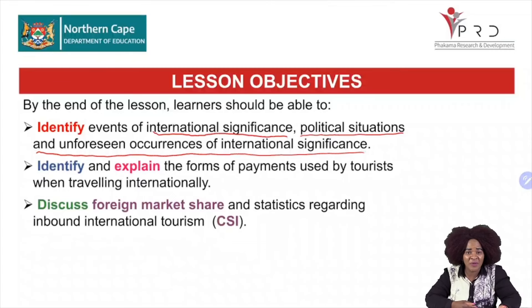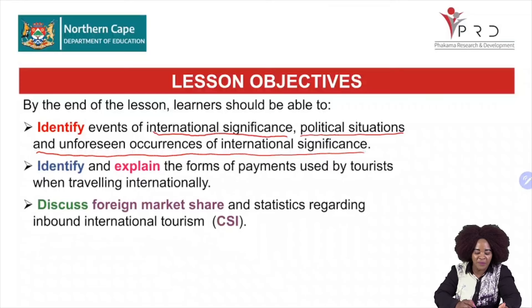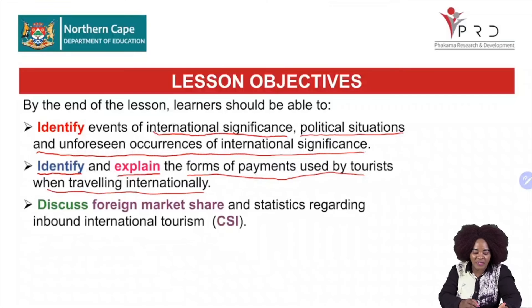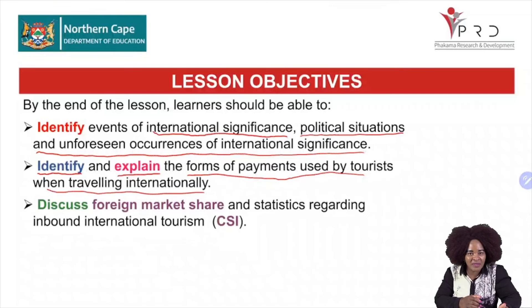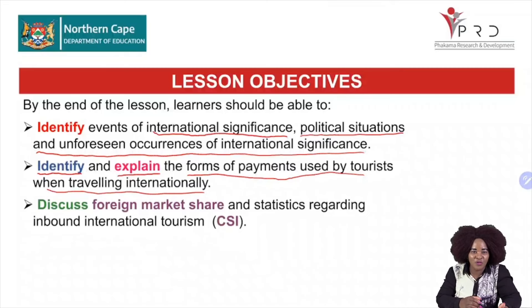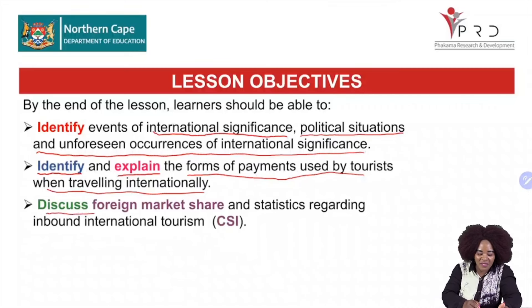You must expect questions on those, because this is question 9 of your question paper, section D, question 9. Again, Grade 12 learners, you must be able to identify and explain the forms of payments used by tourists when travelling internationally. This topic is also assessed in question 9, so there is a lot assessed there that you cannot afford to lose those marks. You must also be able to discuss foreign market share and statistics regarding inbound international tourism.